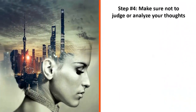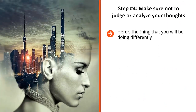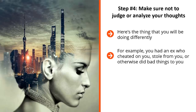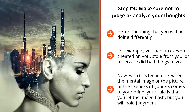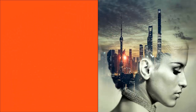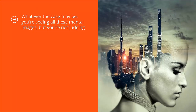Step number four: make sure not to judge or analyze your thoughts. Most people have no problem seeing mental images flash through their mind, but the problem is that once that happens, they get all emotionally caught up. For example, you had an ex who cheated on you, stole from you, or otherwise did bad things to you — how do you think you would feel when you see something that reminds you of him or her? With this technique, when the mental image of your ex comes to your mind, your rule is that you let the image flash but you hold judgment. You're not going to analyze it. You're just going to acknowledge: this is the image of my ex, this is the image of my boss, this is a scene from my childhood. You're seeing all these mental images, but you're not judging — you are acknowledging.